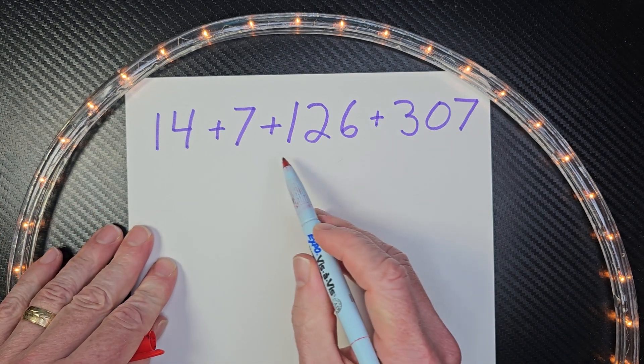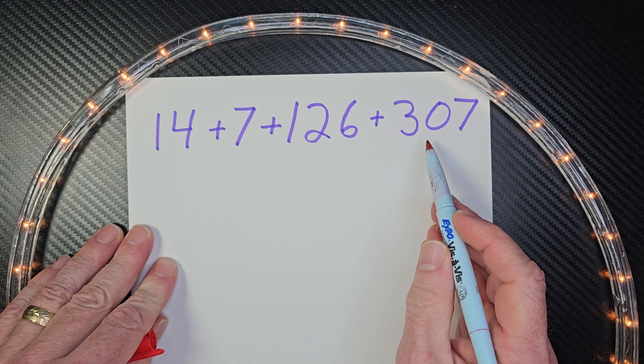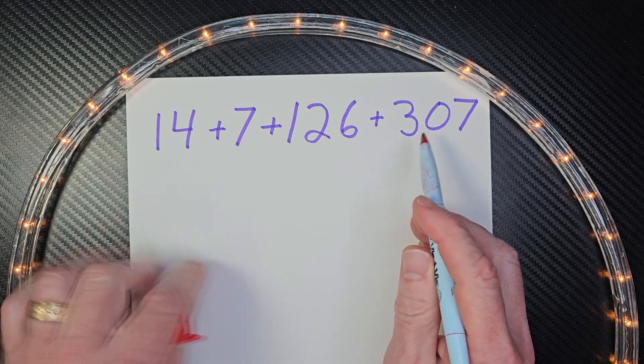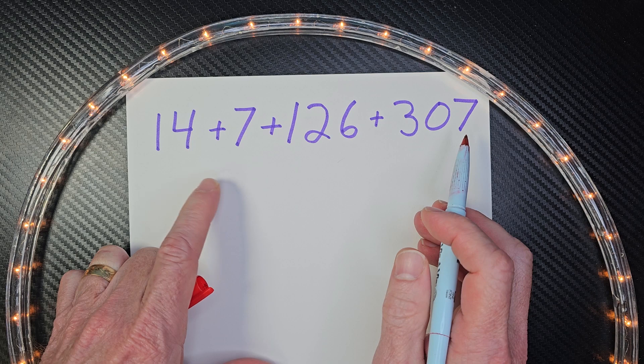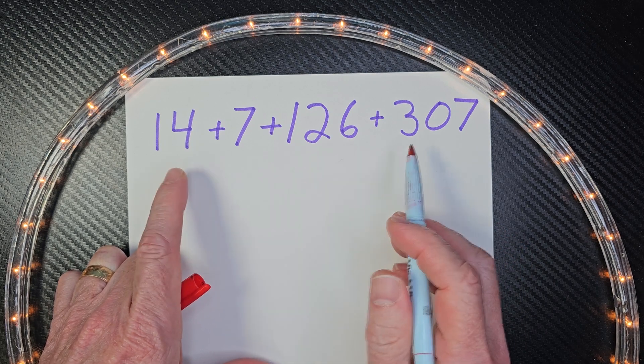We have 14 plus 7 plus 126 plus 307. Now, you can arrange all these numbers any way you want to. It does not matter the outcome.